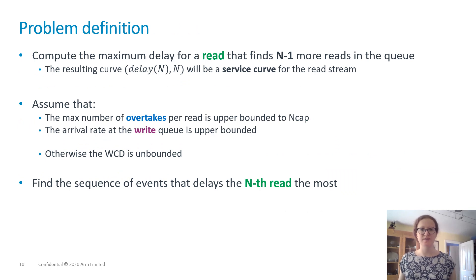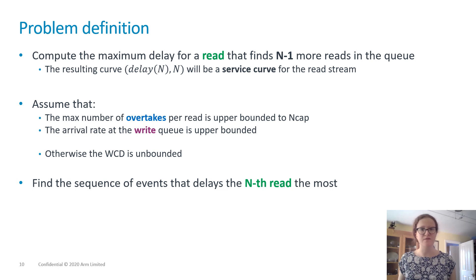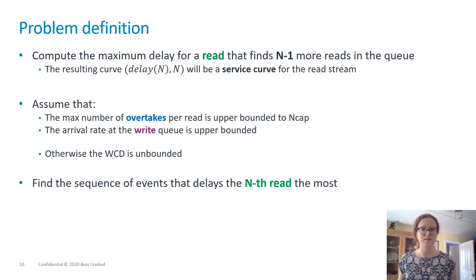The aim of our experiments was to compute the worst-case delay that might be experienced by a read-miss request that finds N-1 more read-misses in the queue when it arrives at the memory controller. The resulting plot is a service curve for the read stream — a mathematical construct representing the worst-case impulse response of a system to a batch of requests. To obtain an upper bound on the delay, we need a worst-case scenario with baseline assumptions: the maximum overtakes a read-miss can experience must be limited to NCAP, and the write-queue arrival rate must be known and bounded, since an infinite rate would yield an unrealistic worst-case result.